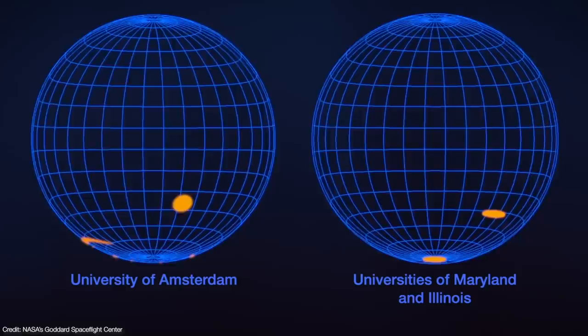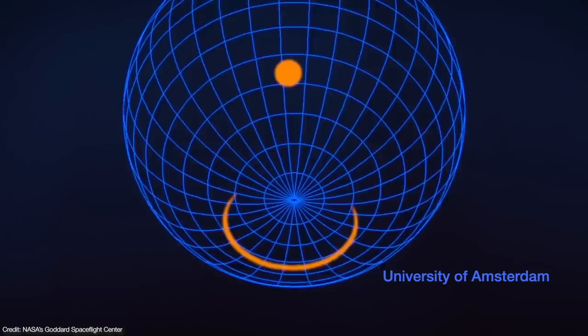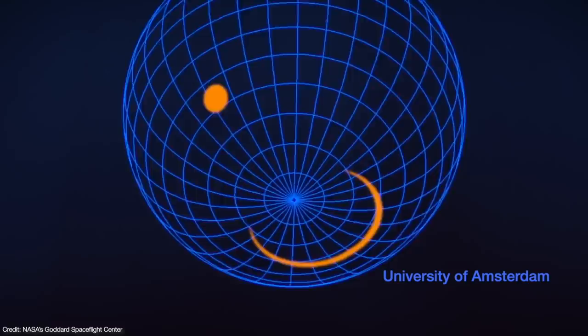It gets even weirder than that. The team led by researchers at the University of Amsterdam suggests that J0030 has one small circular spot and an elongated crescent-shaped spot both surrounding the south rotational pole.